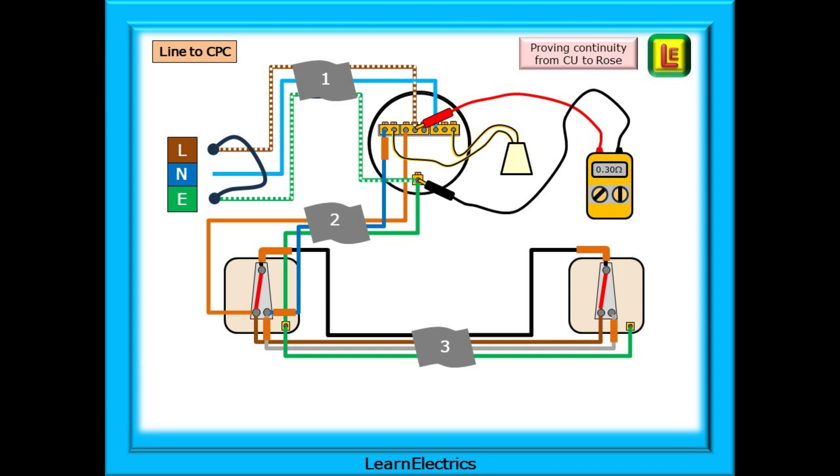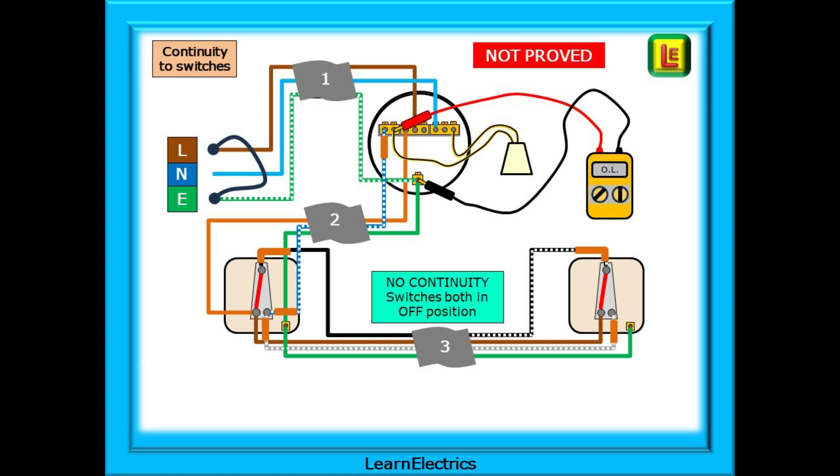The first test is the same as the one-way lighting test. Prove continuity from the consumer unit to the ceiling rows. Link the line and earth conductors at the CU and test at the ceiling rows between the live loop block and the earth terminal. Now prove continuity to the switches. This time test at the ceiling rows between the two-hole switch block and the earth terminal.